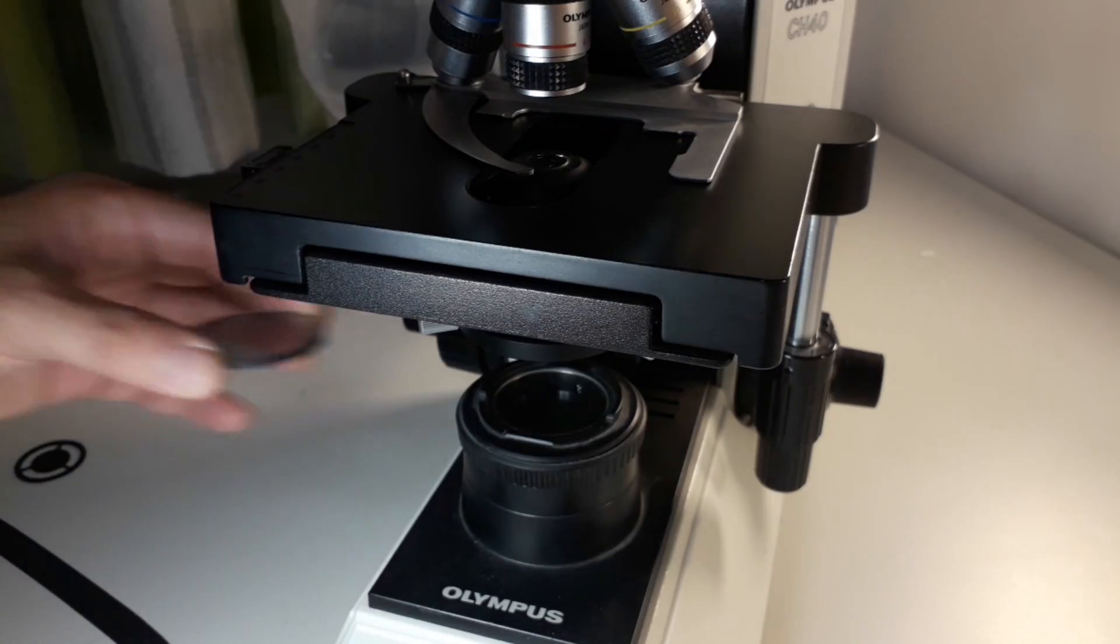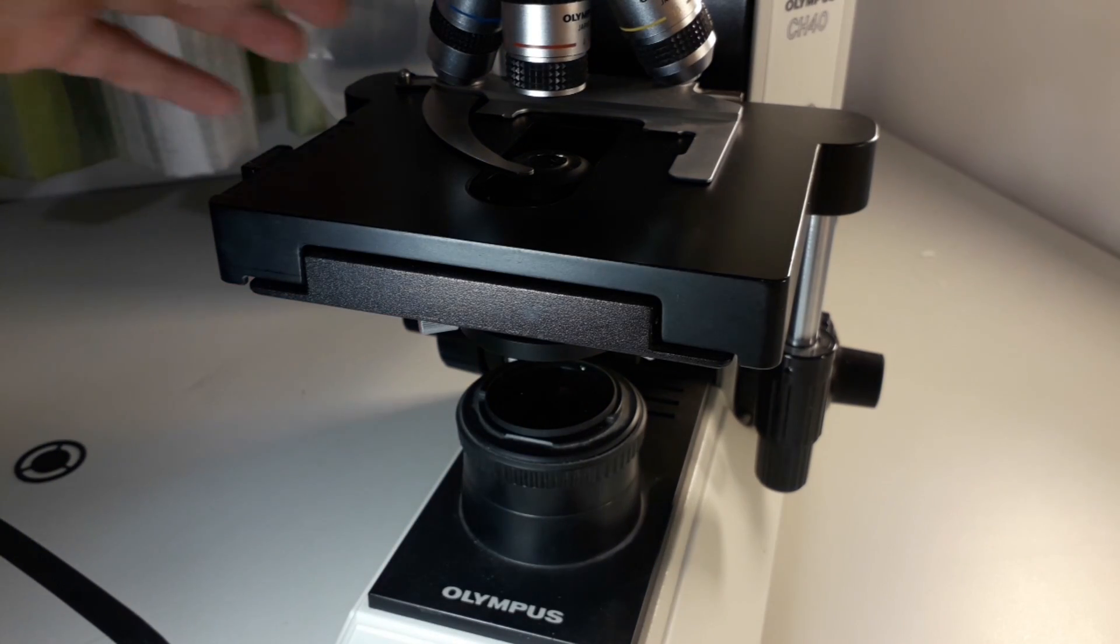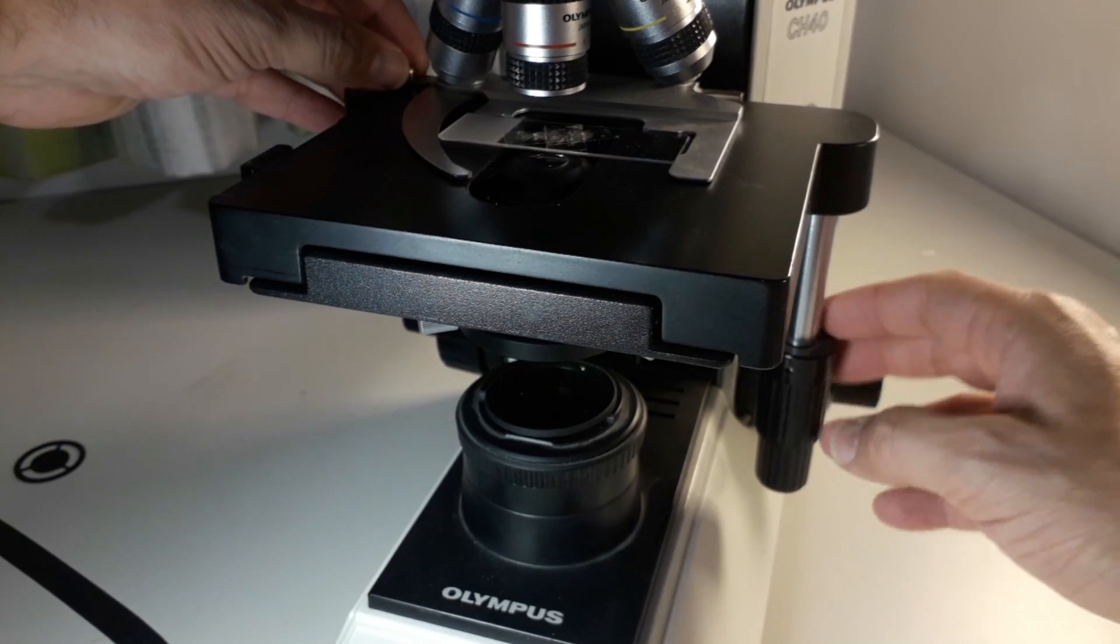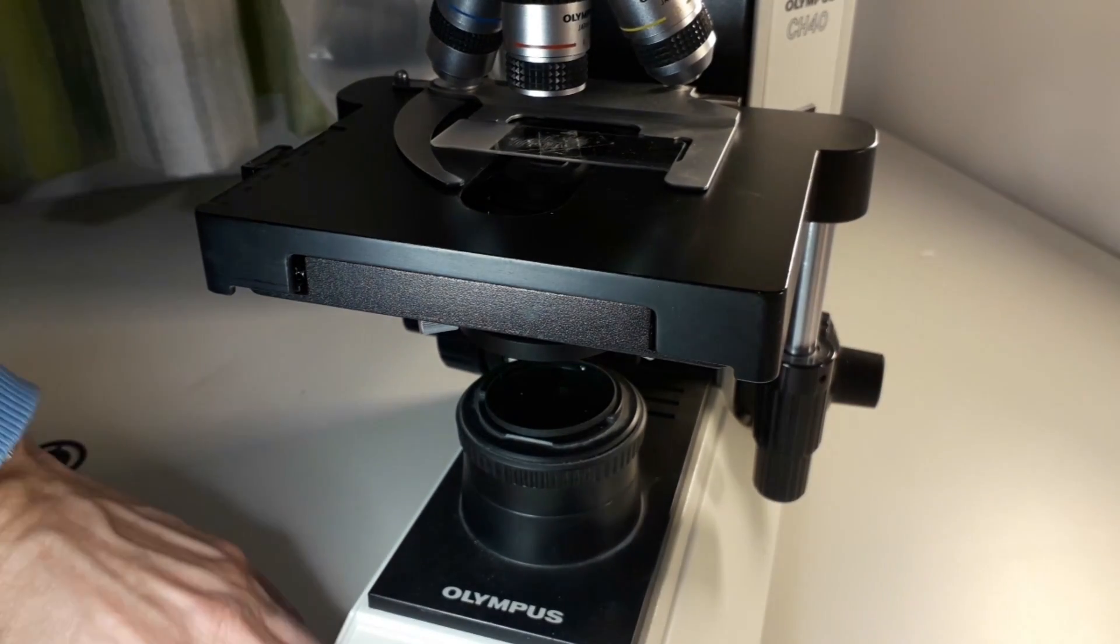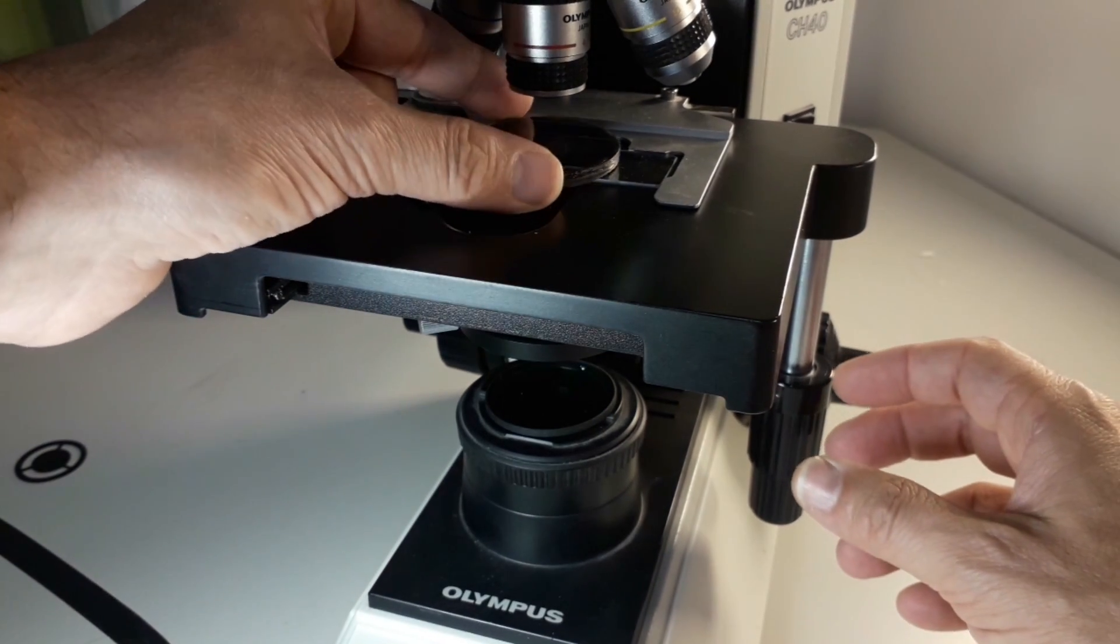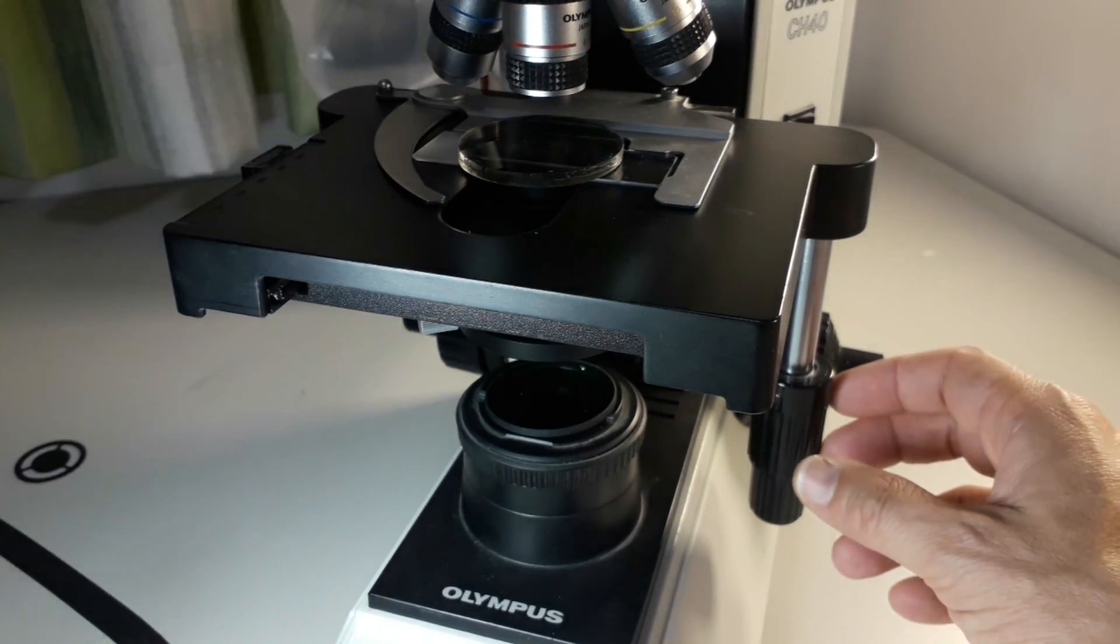I place the polarizing filter on my light source, then I place the slide on the microscope stage, and on top of it goes the second filter. And basically by turning the bottom filter I can get all sorts of interesting light effects.